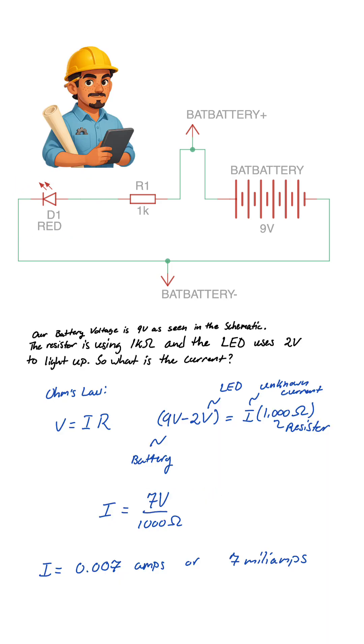Ohm's Law, voltage equals current times resistance, tells us exactly how much current flows. With 9 volts from the battery, minus about 2 volts across the LED, which leaves 7 volts across the resistor. 7 volts divided by 1000 ohms gives 0.007 amps, or 7 milliamps, safe for the LED.